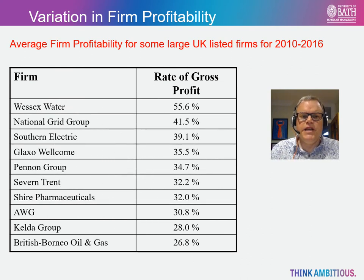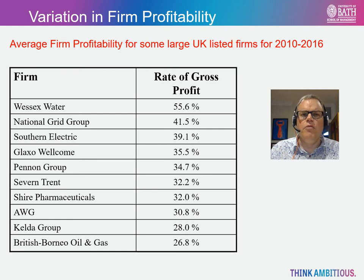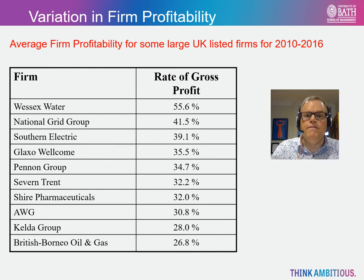In this table, we present some data for UK listed firms for the same time period. What is striking here is that some firms in the same industry have similar returns. For instance, look at Glaxo Welcome and Shire Pharmaceuticals. While in other sectors such as water, companies such as Wessex Water and Severn Trent have very different returns. Again, as an economist or market analyst, you need to ask why. Well, where profitability differs significantly in the same industry, it could be that some firms are not as well managed or have very different cost structures.